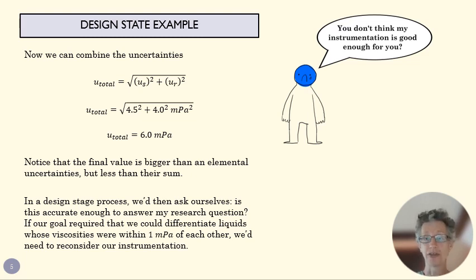So then in our design stage process, if this were a design stage uncertainty process, we'd ask ourselves, is 6 millipascals uncertainty good enough? If for some reason I had a goal of differentiating liquids that might differ in viscosity by only a millipascal or two, I'd look at this and I'd say, oh, that's not going to work. There's going to be too much uncertainty in the values that I produce to actually differentiate these liquids that are very close to each other in terms of viscosity. And in that case I'd have to go back to the drawing board. I'd have to think about getting more expensive instrumentation that's going to give me smaller systematic errors. I'd have to think about how do I keep that temperature really stable throughout the fluid to make sure that my random errors were smaller. And both of those are going to involve spending more money and more time.